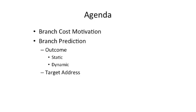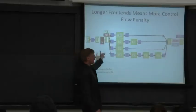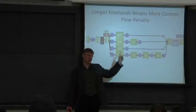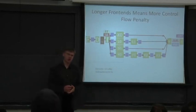Let's talk about why branch prediction matters and what the big motivation is. Longer and more complex pipelines require us to have relatively good accuracy when figuring out whether we take a branch or not. Here we have our in-order fetch, out-of-order issue, out-of-order execute, in-order commit pipeline.